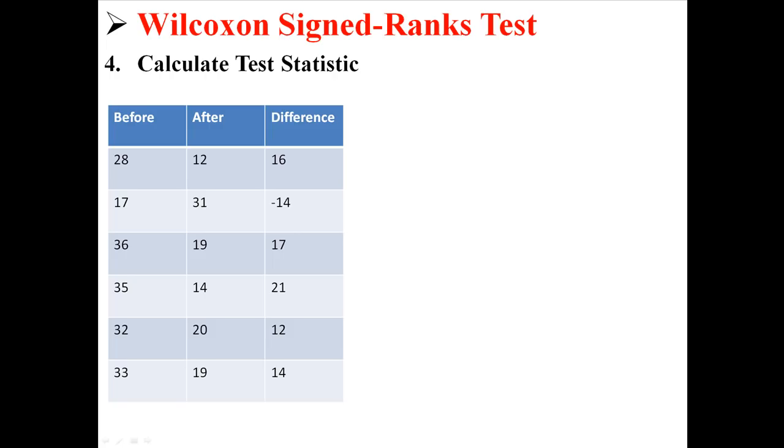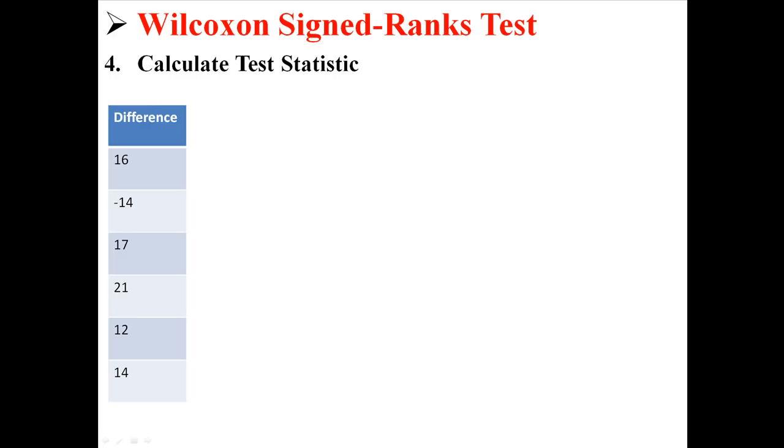Now what we're going to do is rank these difference scores where the lower the number the lower the rank and the higher the number the higher the rank. So our lowest number negative 14 is ranked 1 and our highest number 21 is ranked 6.